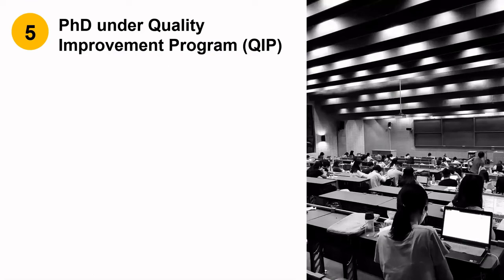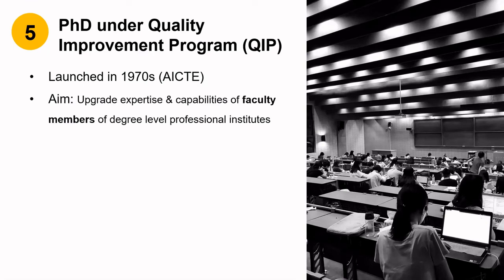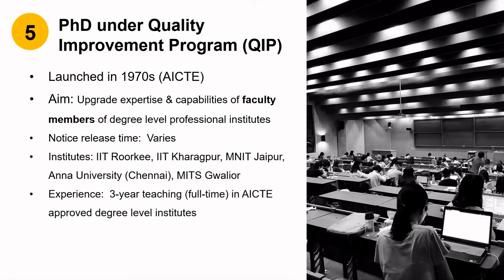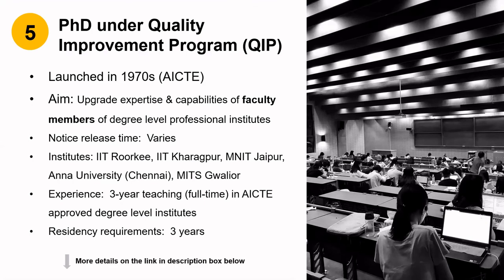Type 5: PhD under the Quality Improvement Program, or QIP. This was launched in the 1970s by the All India Council of Technical Education, or AICTE, for upgrading expertise and capabilities of faculty members of degree-level professional institutes. The call for PhD under this scheme also varies. Overall there are nine major and 79 minor QIP centers across the country, but for architecture and planning there are only five — at IIT Roorkee, IIT Kharagpur, MNIT Jaipur, Anna University Chennai, and MIT Gwalior. A minimum experience of three years in teaching is required, and the residency requirement is three years. For more details, check out the link below.